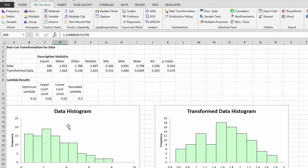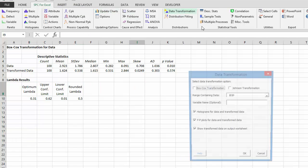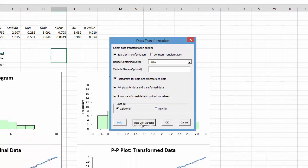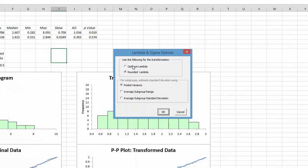Now you had the option up here to either do the optimum lambda or the rounded lambda. Let me show you where those come up. Back when you originally did the transformation, you had the options down here of Box-Cox options. Select that. And here you can pick either the optimum lambda or the rounded lambda.